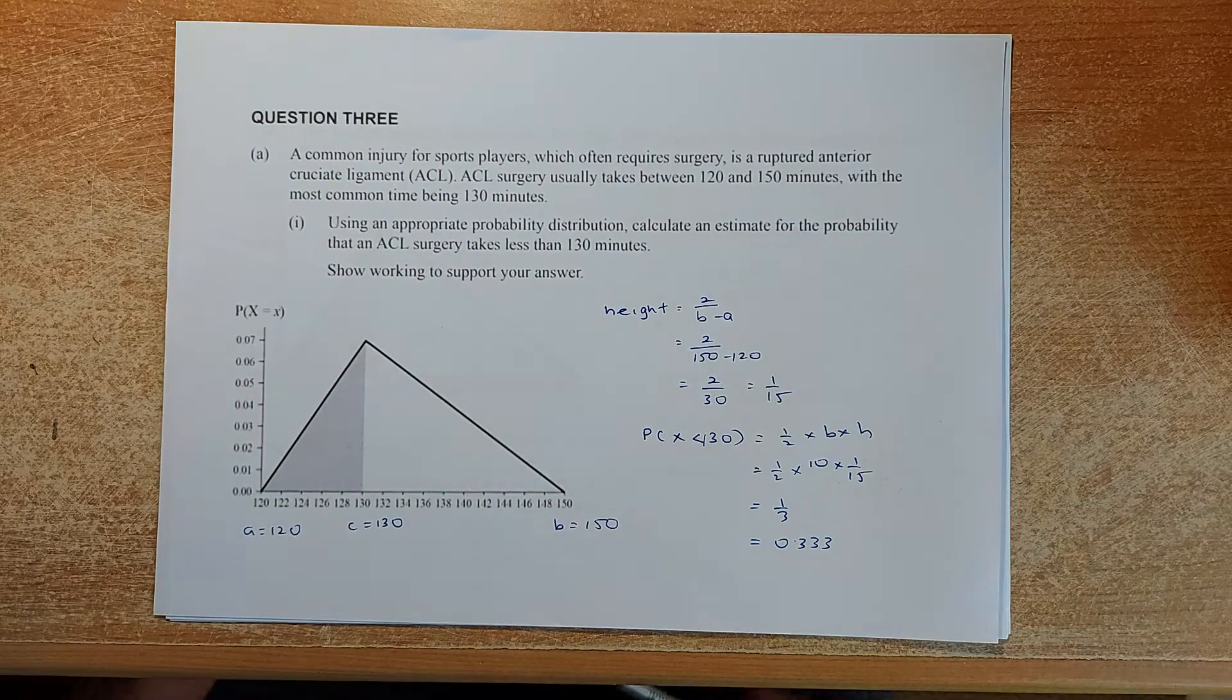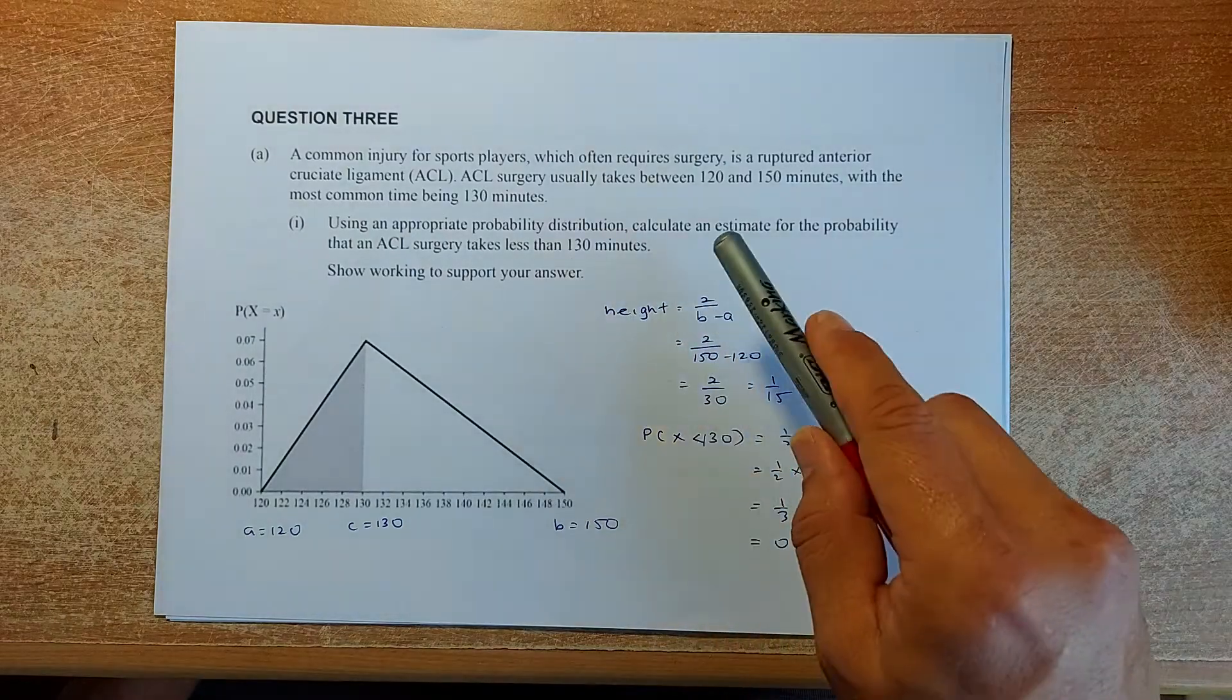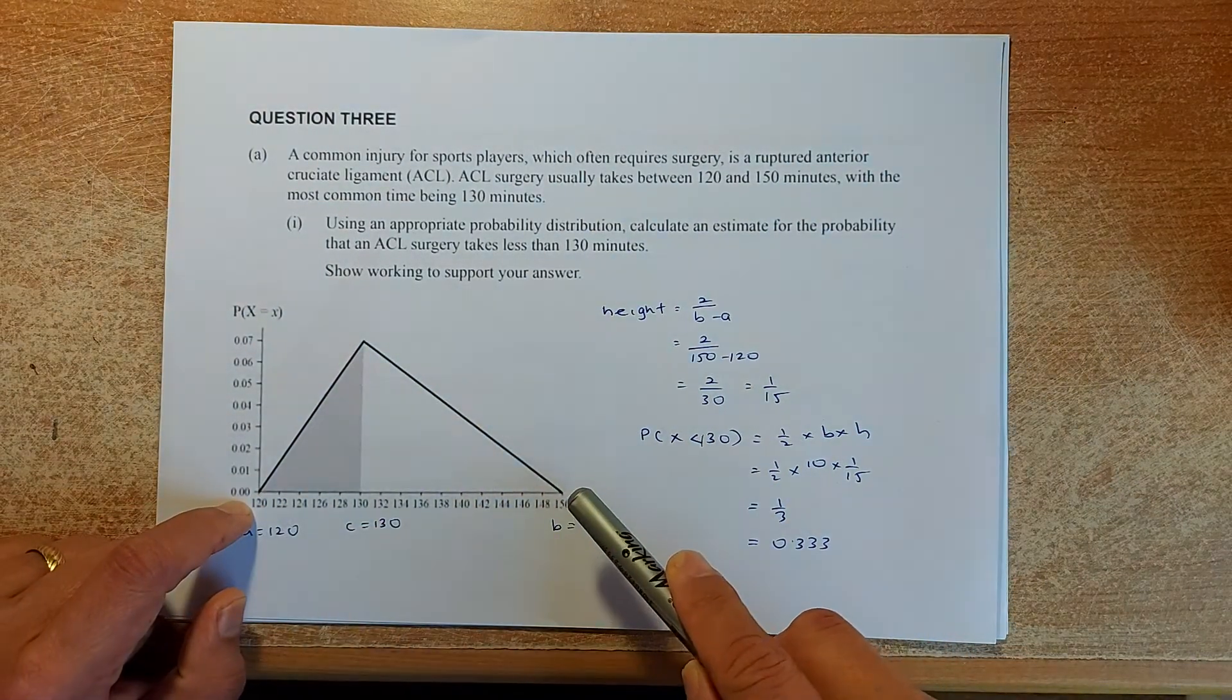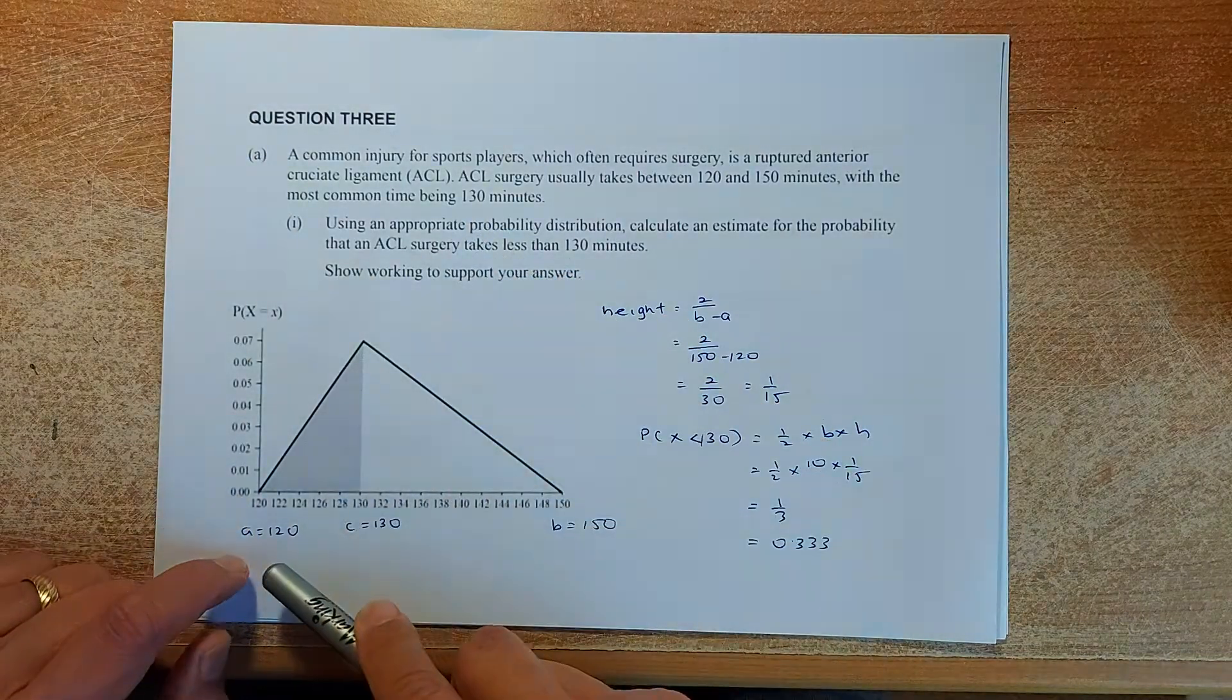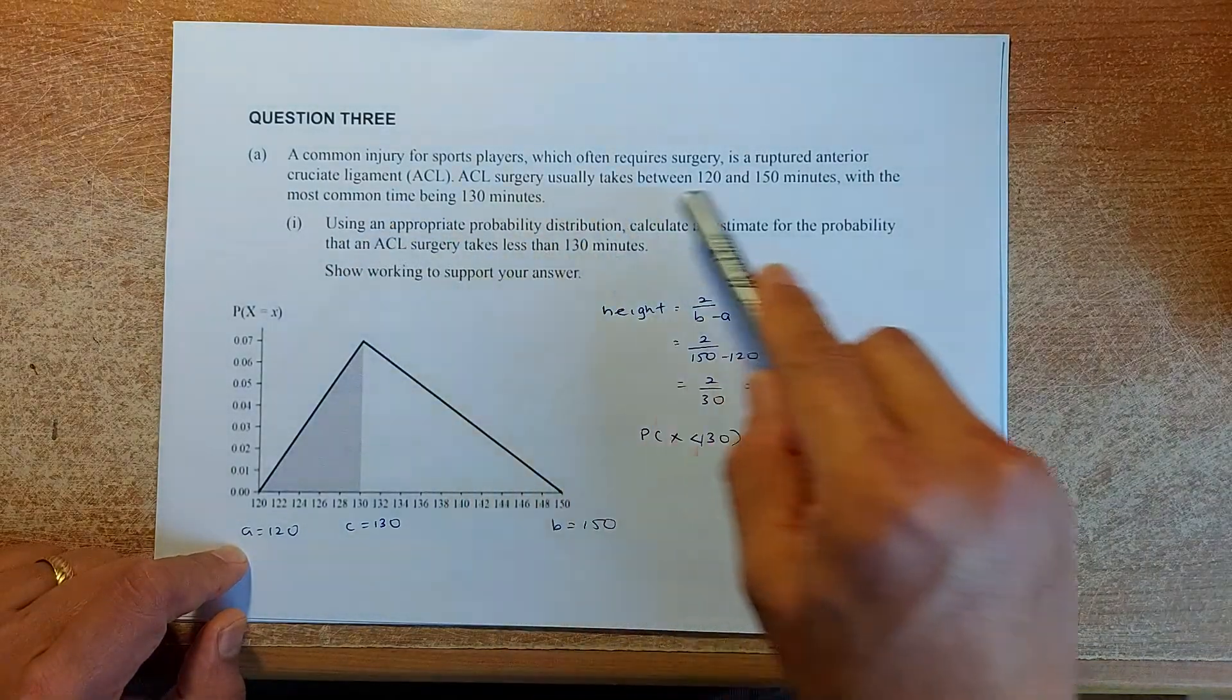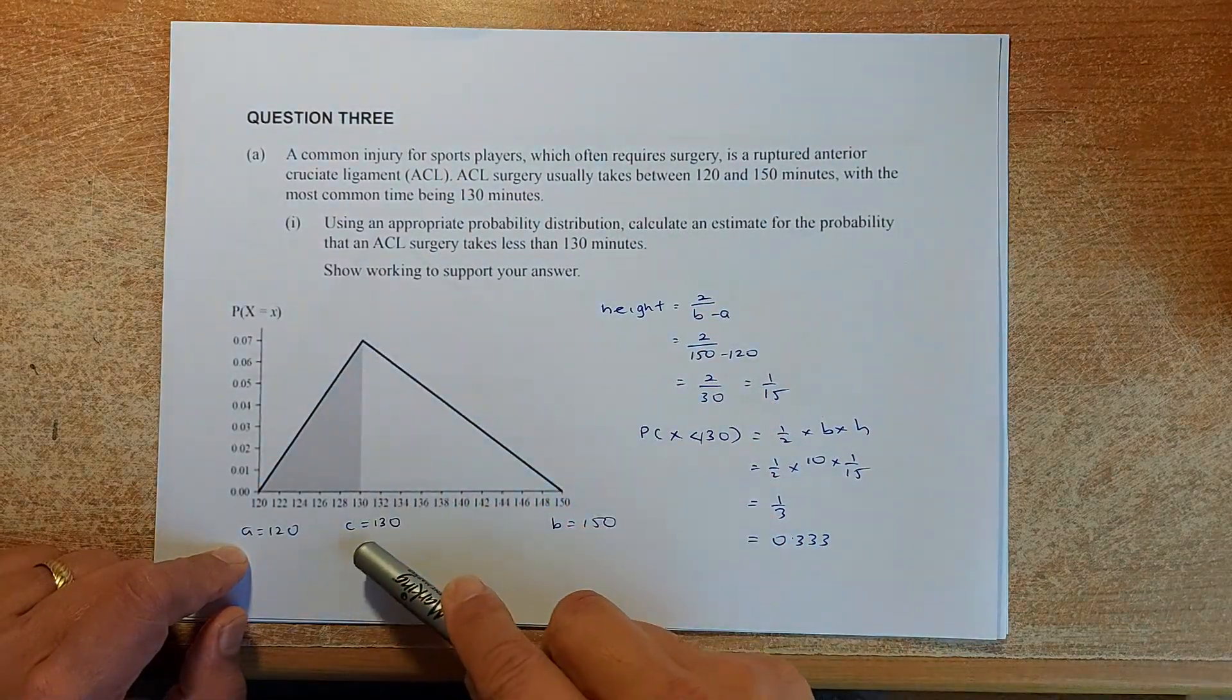Question 3 is actually a triangular distribution. For the first time I've seen both rectangular and triangular distribution in the same paper. A common injury for sports players which requires surgery is ACL. ACL surgery usually takes between 120 to 150 minutes. The most common time being 130 minutes.